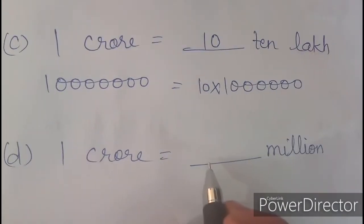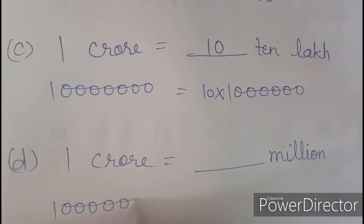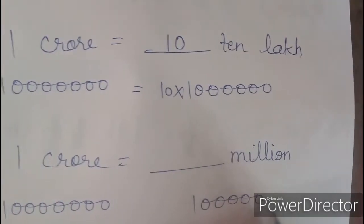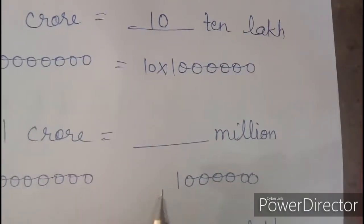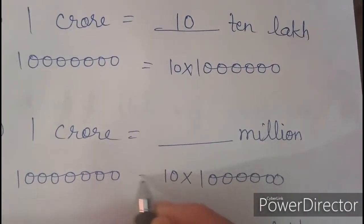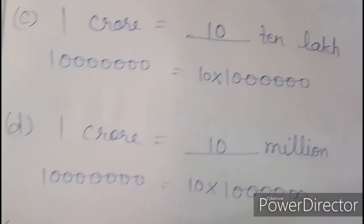Question number D: 1 crore is equal to dash million. 1 crore has 7 zeros, and 1 million has 6 zeros. Now we can make them equal by multiplying it with 10. So 1 crore is equal to 10 million.